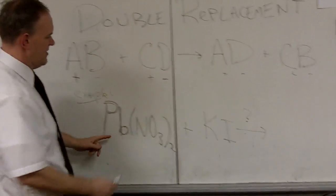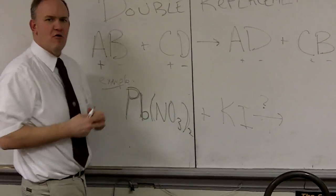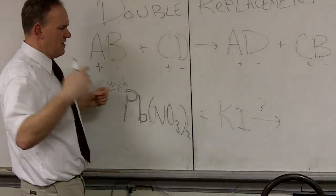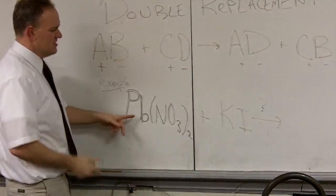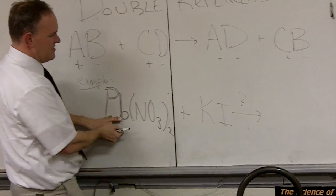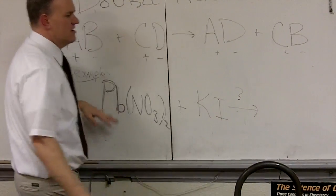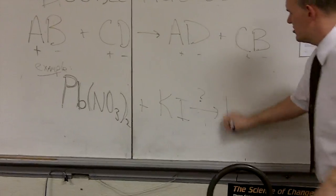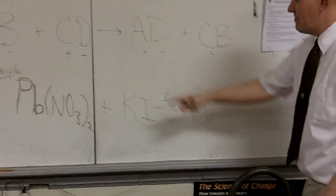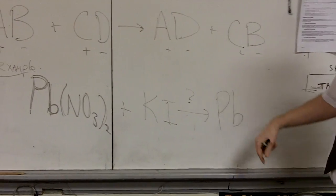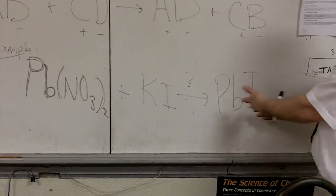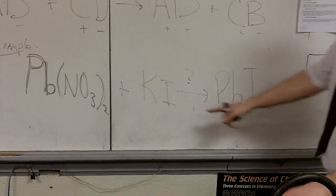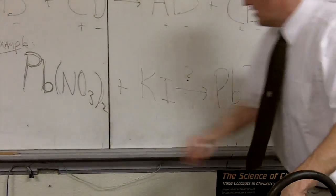And so the lead is going to end up, it's almost like the foil method from algebra, except it's the outers and the inners go together. And so lead, the positive here, goes with the negative I there, and you need to know the charges. We can inspect that and determine that that lead is a plus two, so that would have to be PbI2 is one of the products. That's our new couple. And our other couple is potassium with nitrate.